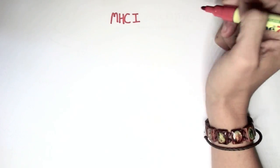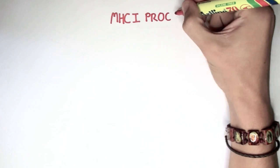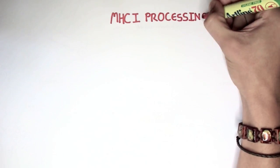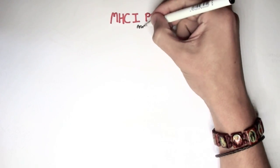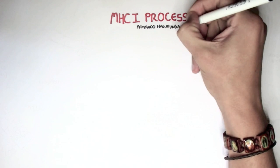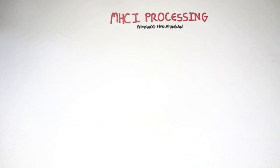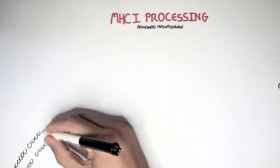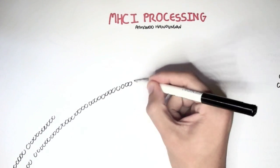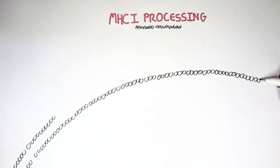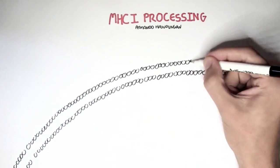In this video, we're going to talk about major histocompatibility complex class I processing, MHC I processing. We're going to talk about how a cell processes MHC class I together with an antigen and how the cell will express this MHC class I with an antigen on it, expressing it to a CD8 T cell because MHC I is only expressed when a cell is infected.